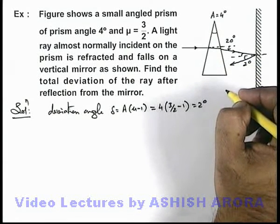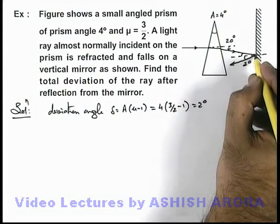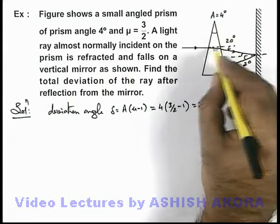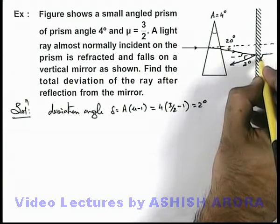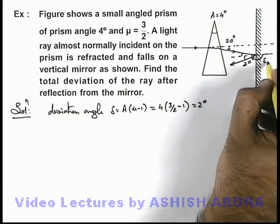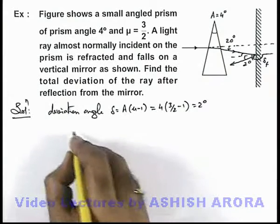Here we are required to find the total deviation of the ray after reflection. So in this situation, the original direction of the incident ray was horizontal. From this direction, if the ray is deviated by this angle delta final, then here we can write total deviation.